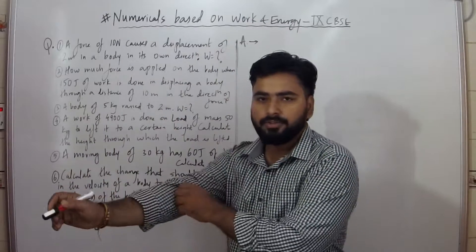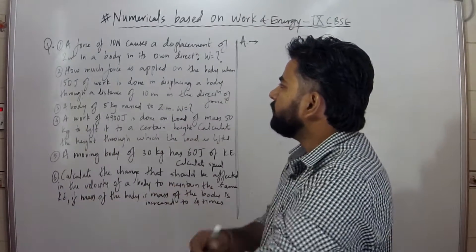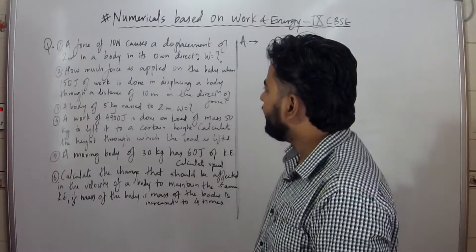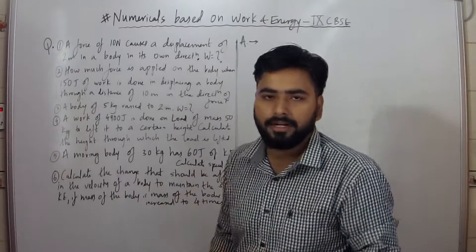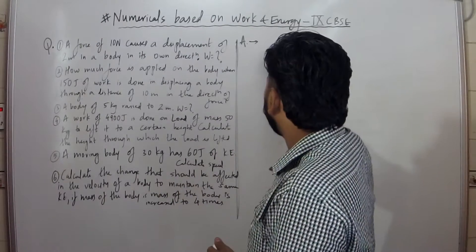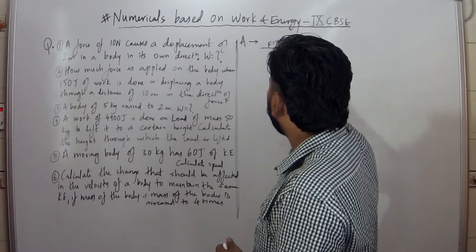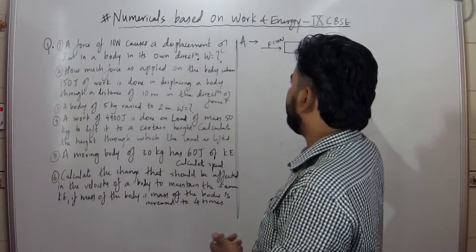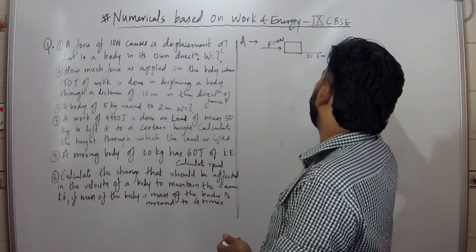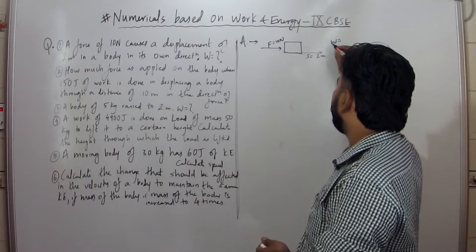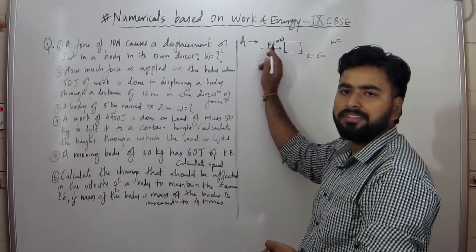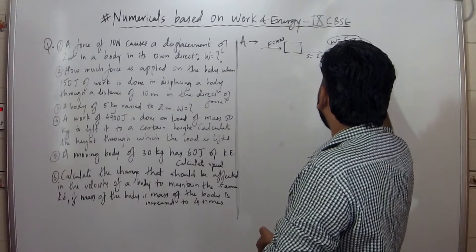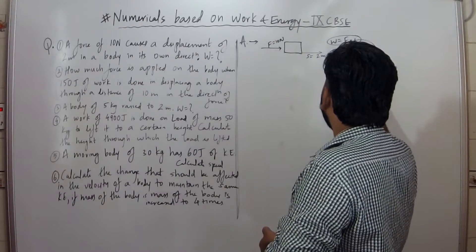Let's start with the first question: a force of 10N causes a displacement of 2m in a body in its own direction — same direction. What is the work done? The work done formula is very simple, there is no need for conversion. Work is equal to force into displacement, so it is 10 into 2, that is 20 joules is the amount of work done.